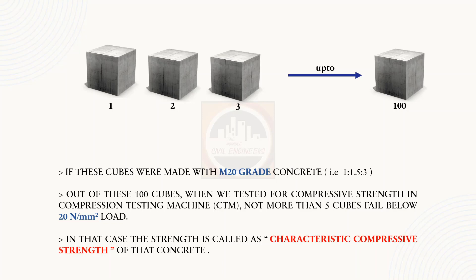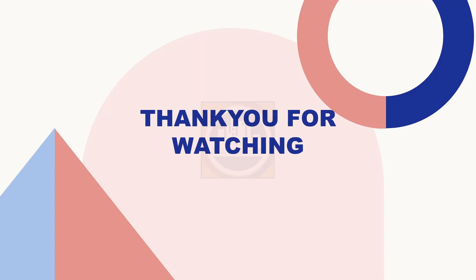When these 100 cubes are tested for compressive strength in a compression testing machine (CTM), not more than 5 cubes should fail below 20 N/mm² load when tested. In that case, the strength is called the characteristic compressive strength of that concrete.